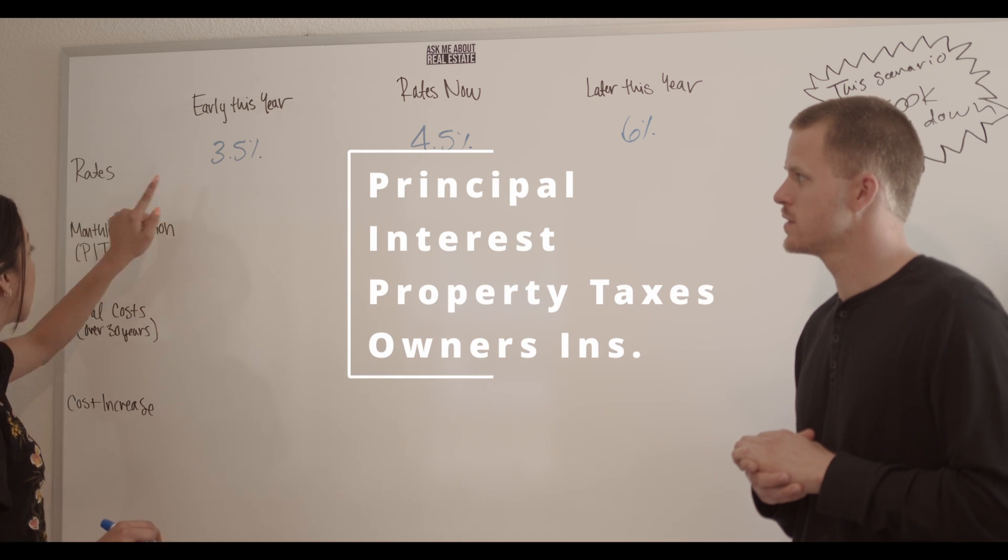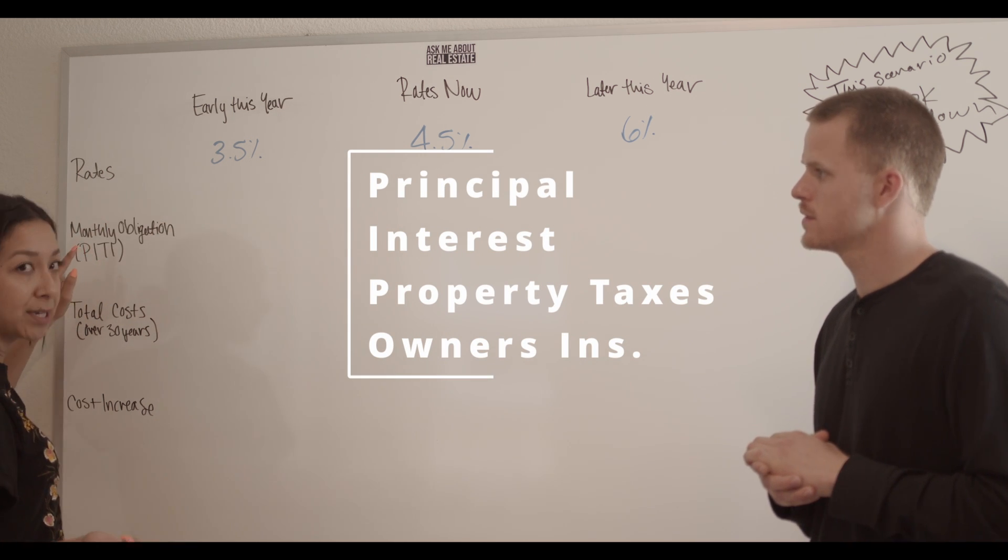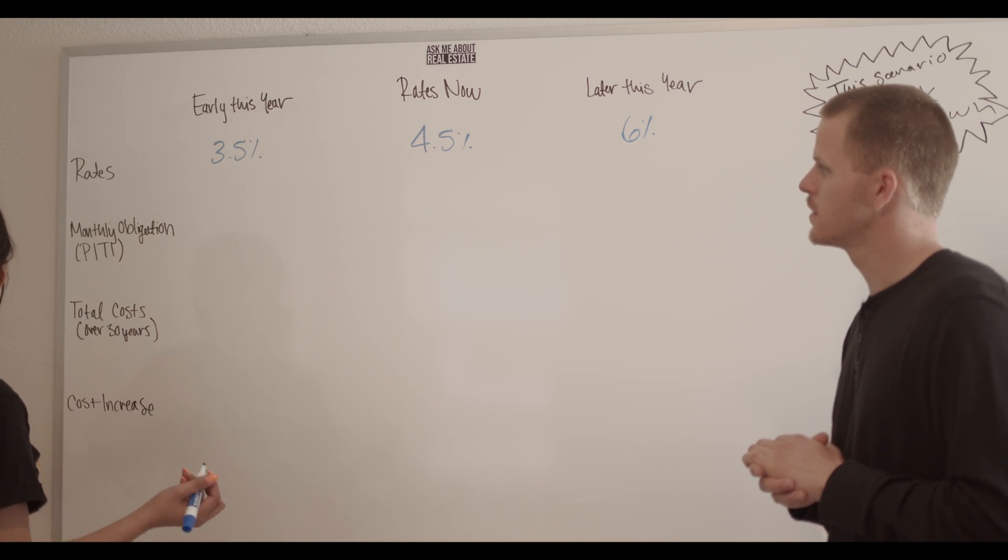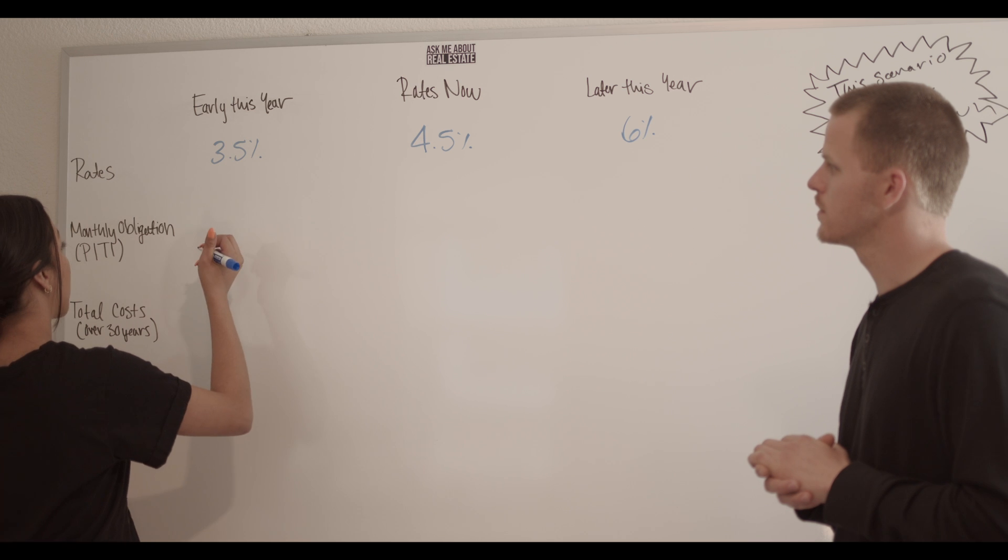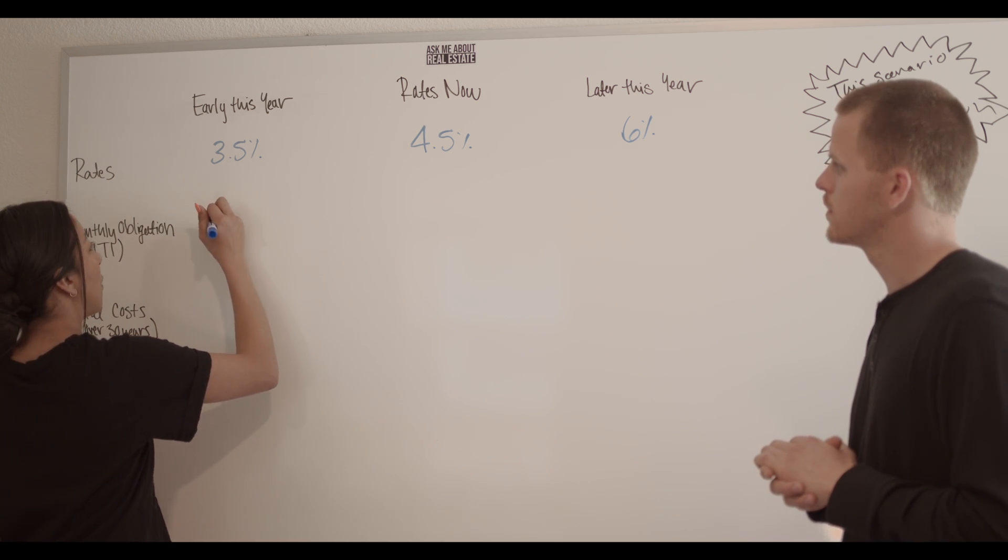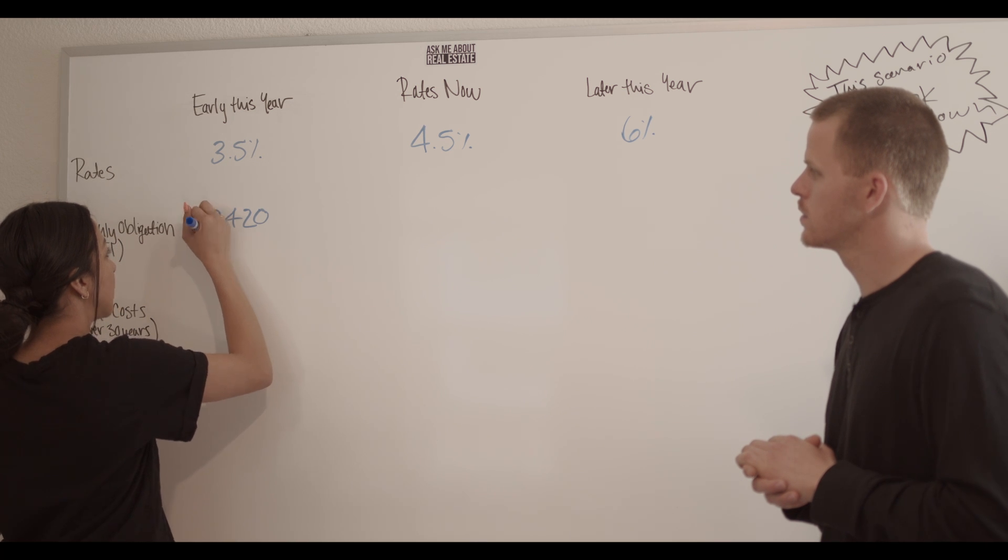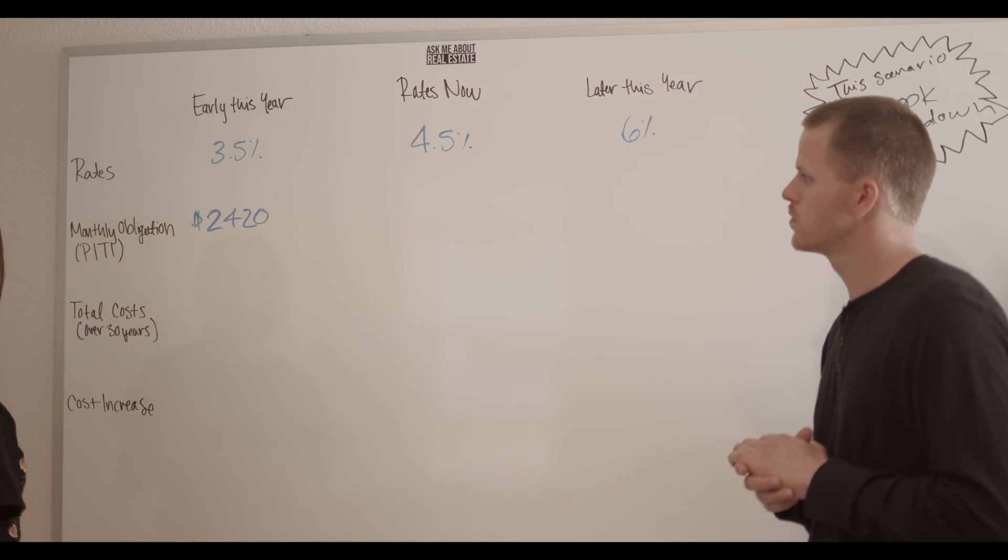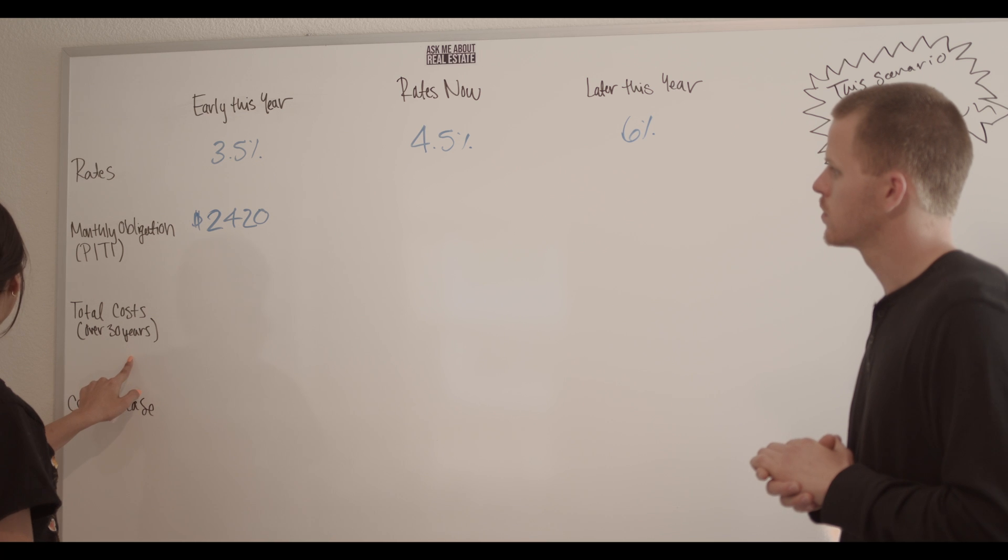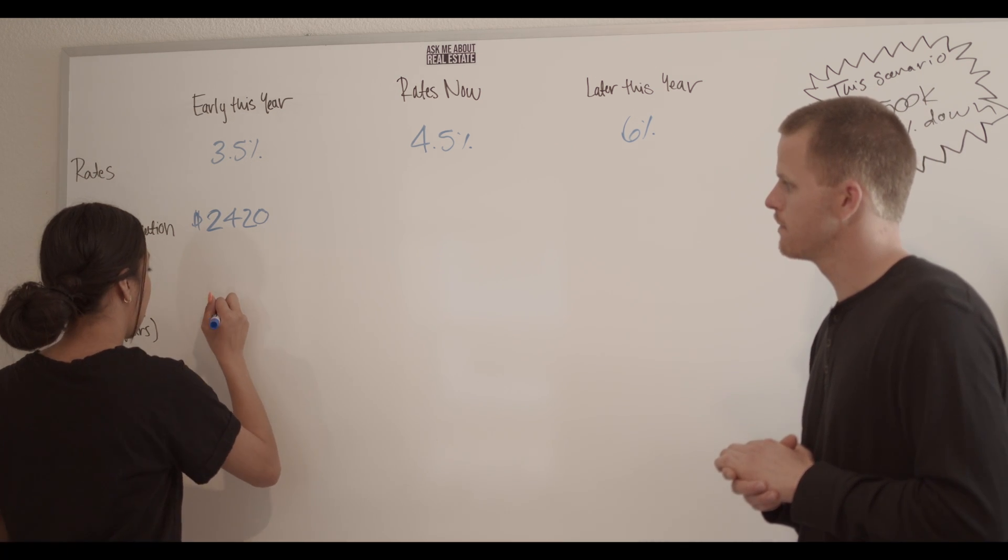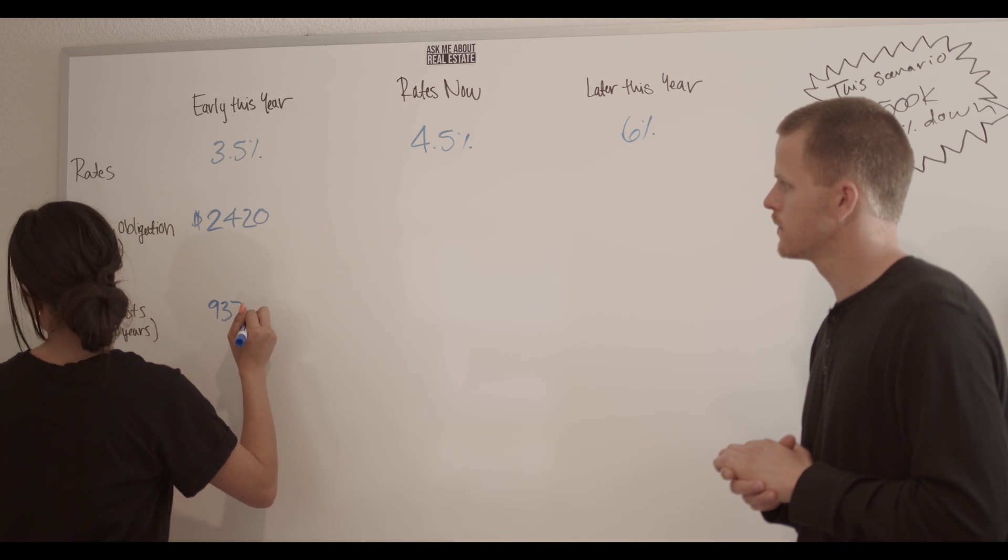...the taxes, property taxes, and homeowner's insurance. So for a $500,000 home, this would come out to a monthly payment of roughly $2,420, and then over the course of 30 years, that is going to be a cost of about $937,125.